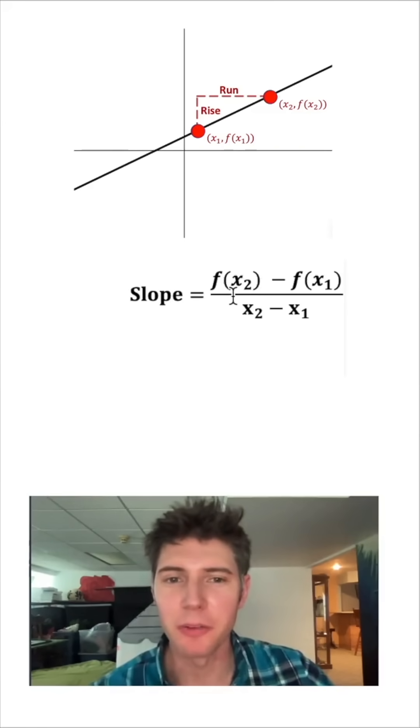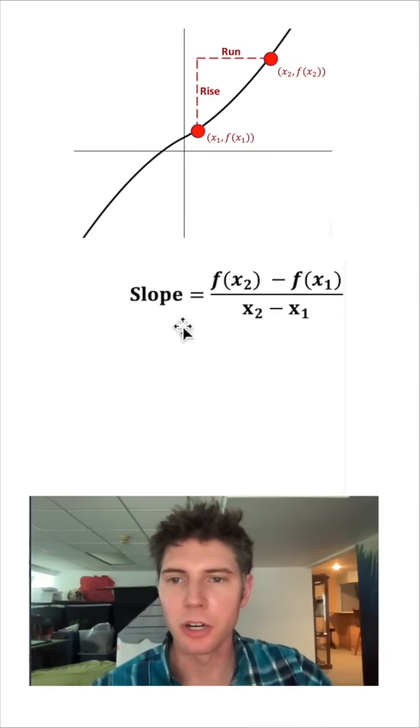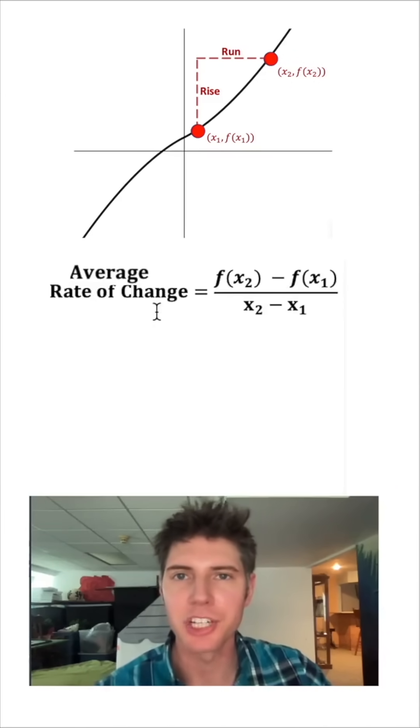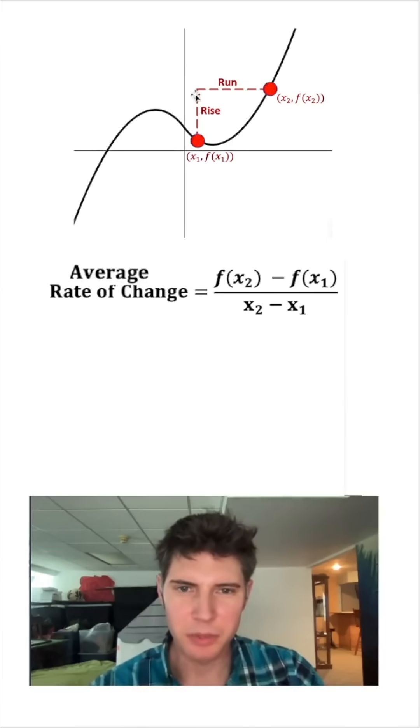The reason function notation is so helpful is we can now do things that aren't lines. And now that we're not dealing with straight lines anymore, it's no longer called a slope. It's an average rate of change. That's on average, how much do we change going from this point to this point? This seems kind of weird. We say rise over run, but now it's going down and up.